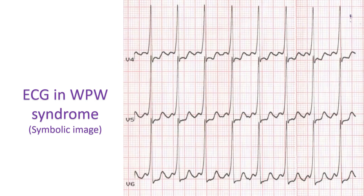In a study of 30 patients with Epstein's anomaly and cardiac arrhythmia, 4 had undergone surgeries. Among the 4 surgical patients, 3 had atriotomy scar-related atrial re-entrant tachycardia. Among the 26 unoperated patients, 1 had typical AV nodal re-entrant tachycardia (AVNRT).